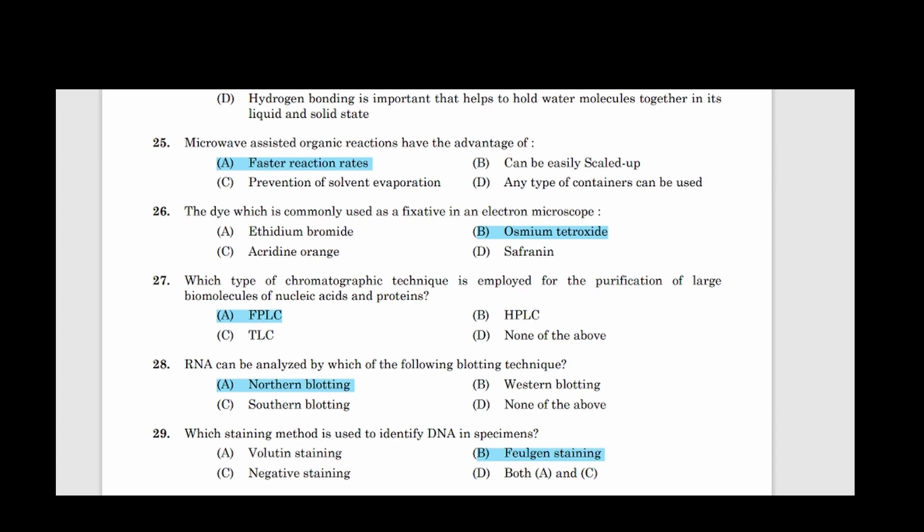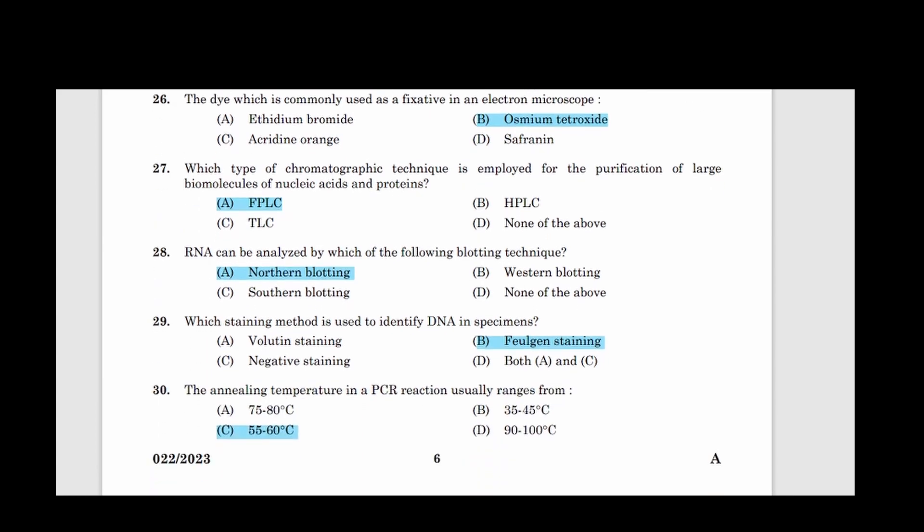Twenty-sixth question: The dye which is commonly used as a fixative in an electron microscope. Answer option B, Osmium tetroxide. Twenty-seven: Which type of chromatographic technique is employed for the purification of large biomolecules of nucleic acids and proteins? Answer option A, FPLC. Twenty-eight: RNA can be analyzed by which of the following blotting technique? Answer option A, Northern blotting. Twenty-nine: Which staining method is used to identify DNA in specimens? Answer option B, Feulgen staining.